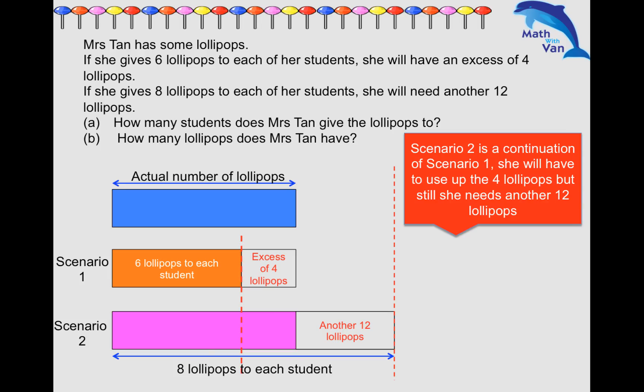As a continuation, remember that whatever the excess of four, she must use up. And after using up this four extra lollipops, she still does not have enough - she still needs another twelve.